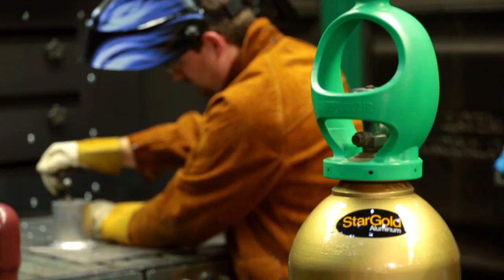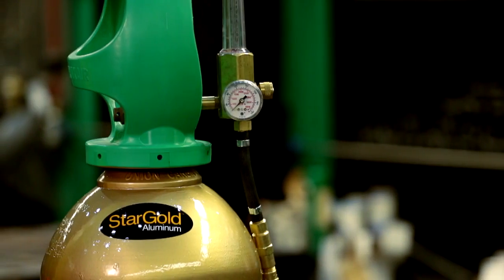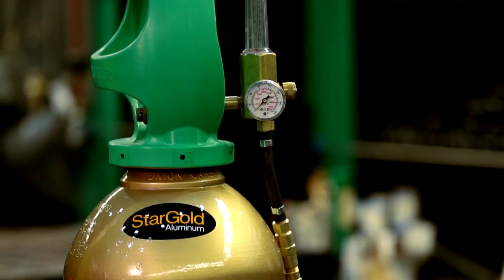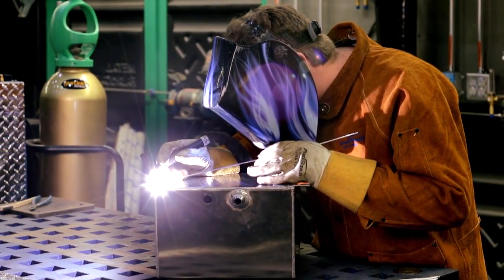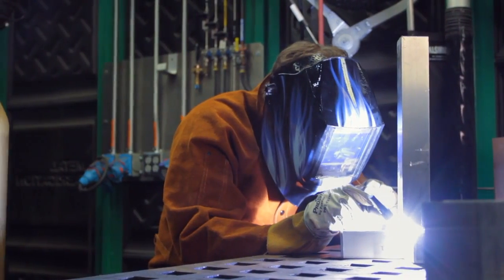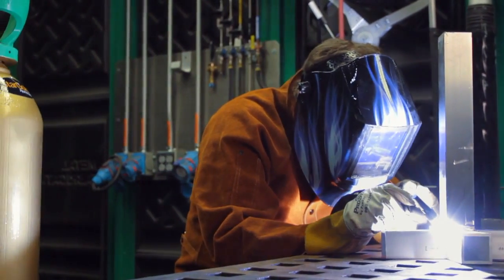Praxair's Stargold Aluminum Shielding Gas is a specialty formulated argon-based blend created to enhance arc performance. Stargold Aluminum Shielding Gas provides greater weld penetration and improved weld quality when compared with pure argon shielding typically used for AC gas tungsten arc welding or TIG welding.